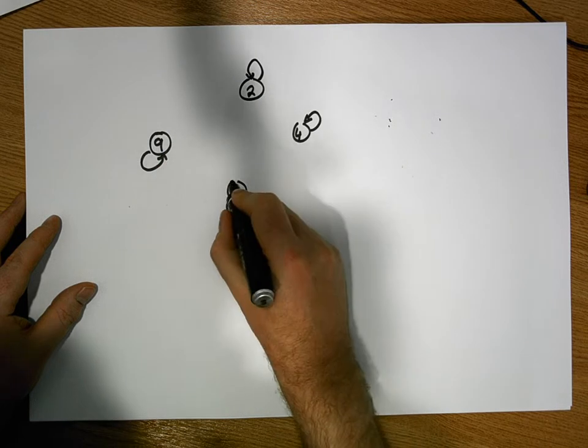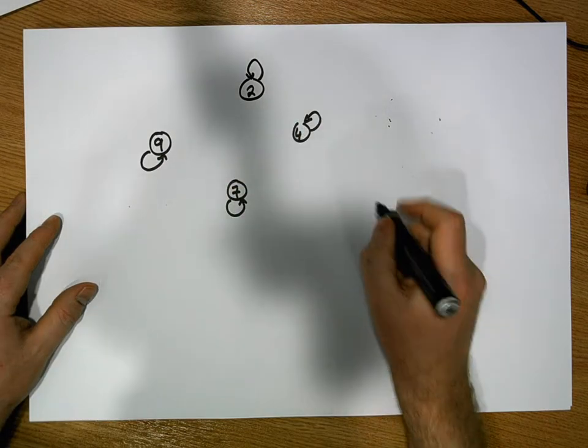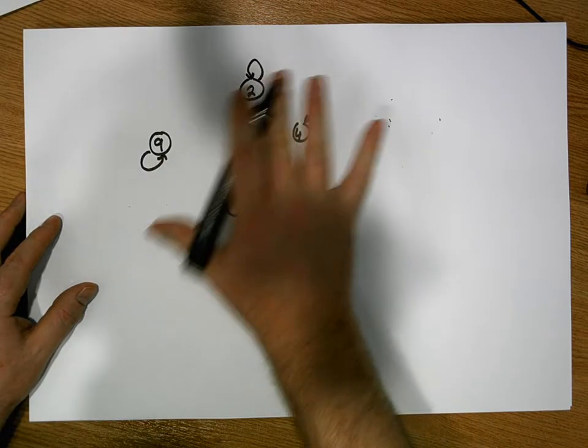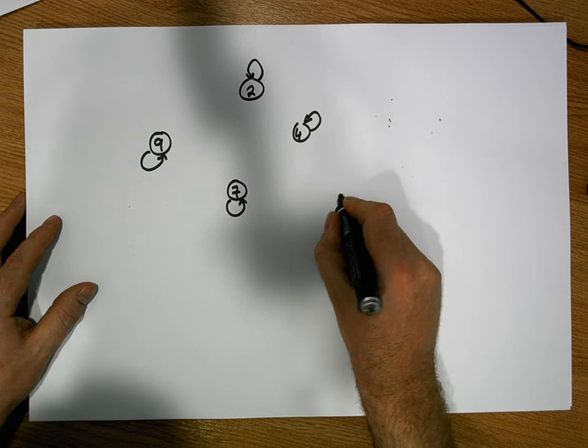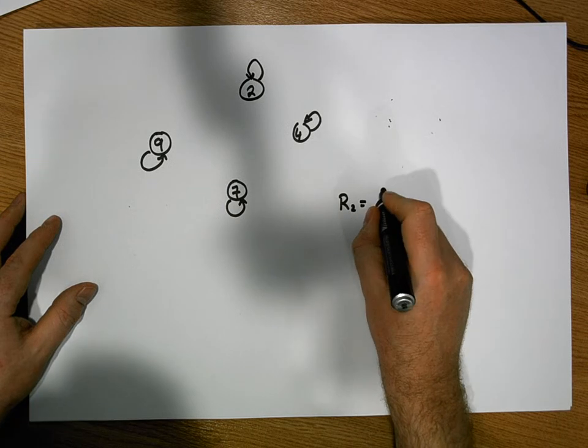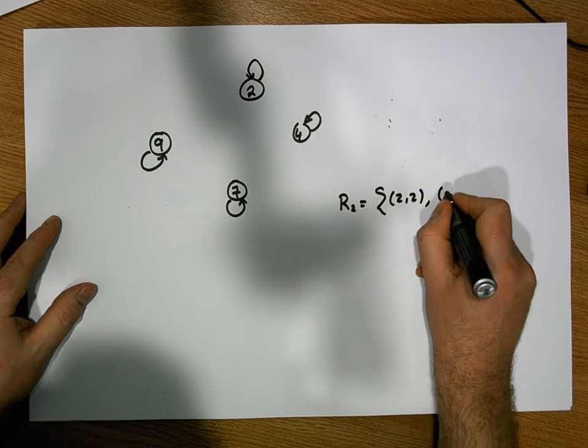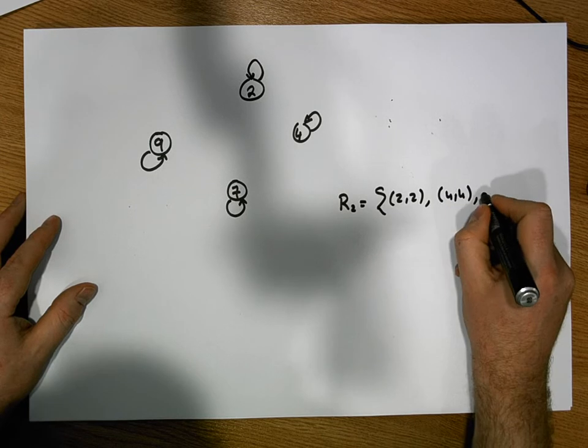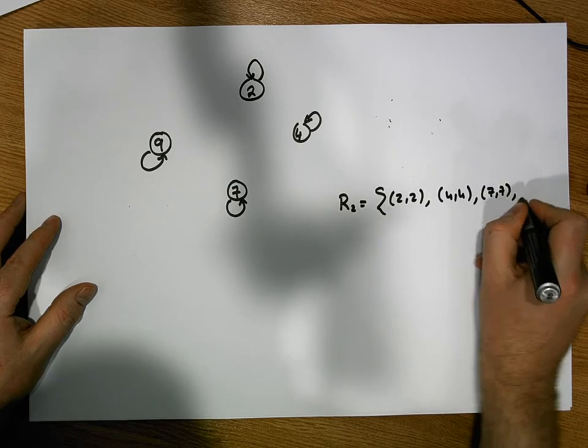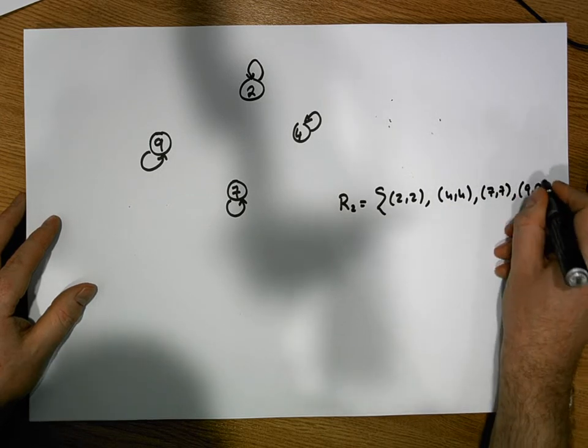Now, at this particular stage, this relation represented in this particular digraph, this relation, let's call it R2, contains (2,2), (4,4), (7,7), and (9,9).